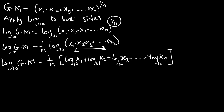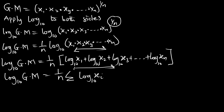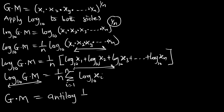This simplifies to: log base 10 of GM equals 1 over n times the summation of log base 10 of xi, where i goes from 1 to n. Since we want GM alone, we take the anti-log of both sides. Anti-log cancels the log, giving us: GM equals anti-log of (1 over n times the summation of log base 10 of xi, from i=1 to n).